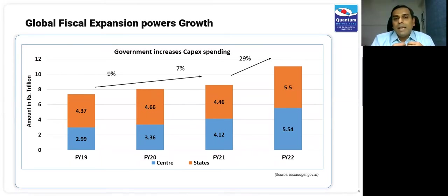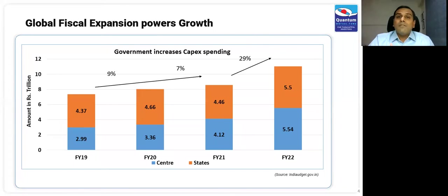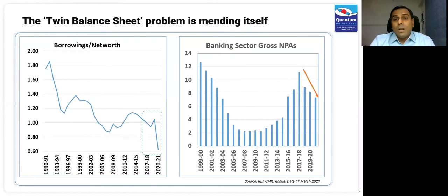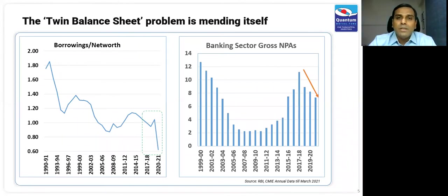If a part of that is spent on CAPEX — meaning the government spends on infrastructure, roads, ports, airports, and also improves health and education infrastructure — this will have long-term growth impacts. That global fiscal spending has led to recovery is one reason we believe India will come back to that 6 to 6.5% real GDP growth.